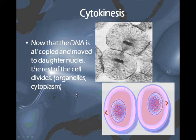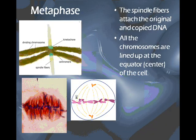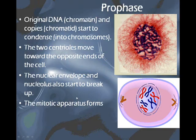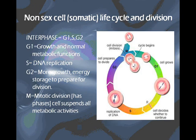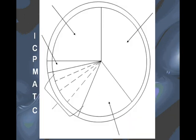If you look back on the diagram from the beginning, this would be representing prophase, metaphase, anaphase, and telophase. All of these together compose mitosis.